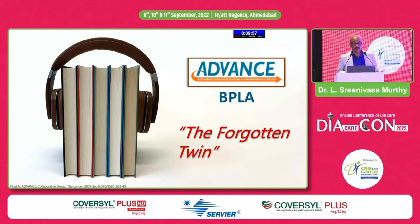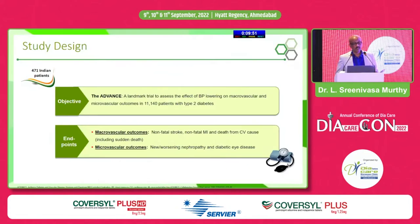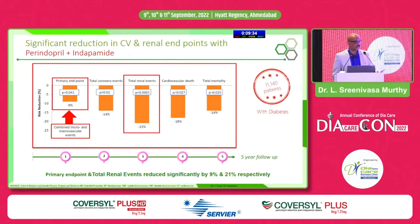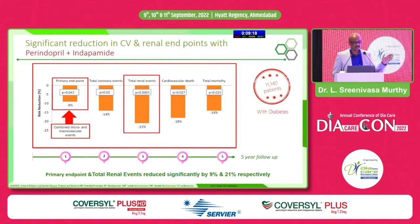The ADVANCE BP-lowering trial — a forgotten twin combination — is a landmark trial with over 11,000 patients, including about 500 Indian patients. Primary endpoints were macrovascular and microvascular outcomes, with new/worsening nephropathy as secondary endpoints. Significant reduction in CV and renal endpoints was seen with perindopril-indapamide. Combined micro and macrovascular events, total coronary events, and total renal events were all reduced — MACE events by 9% and total renal events by 21%.